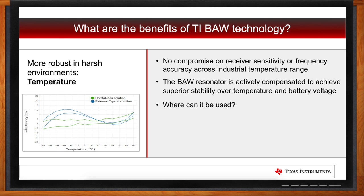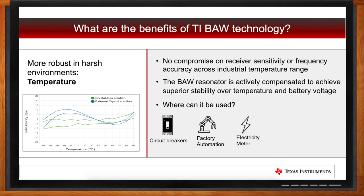Applications requiring wireless technology in high-temperature environments include circuit breakers and products in the grid and metering space — many of those products sit outside and could be in 110-degree Fahrenheit weather in Texas or in Alaska. Factory automation also sees high-temperature environments from machinery. HVAC systems are another example — your HVAC system sitting in the attic can easily exceed 100 degrees, and you still need your wireless system to maintain stability of transmission, which comes from the clocking reference.